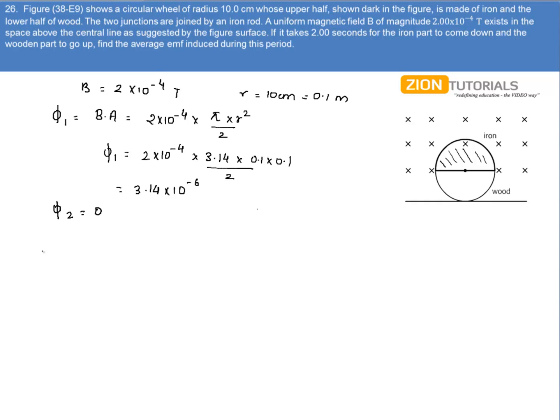Now to calculate the average EMF, we have phi 2 minus phi 1 divided by delta t, that is the time taken for the change in flux with a negative sign. So we have phi 2 is 0 minus 3.14 into 10 to the power minus 6 divided by 2.